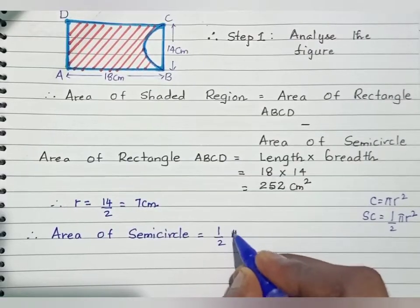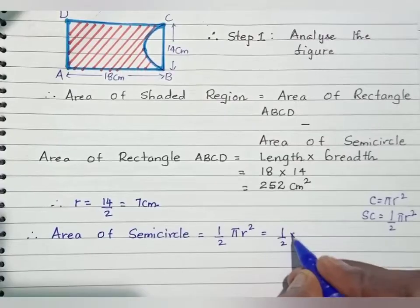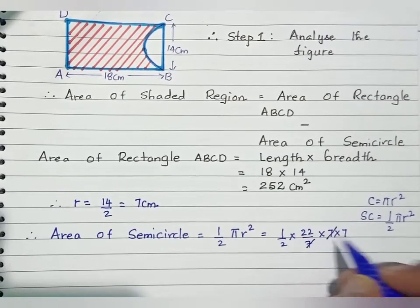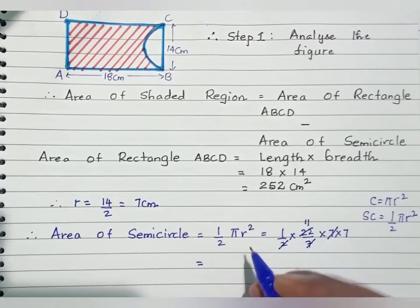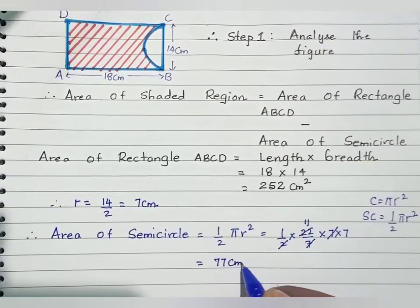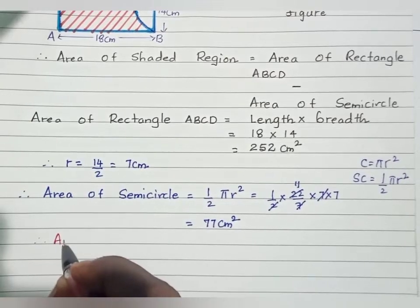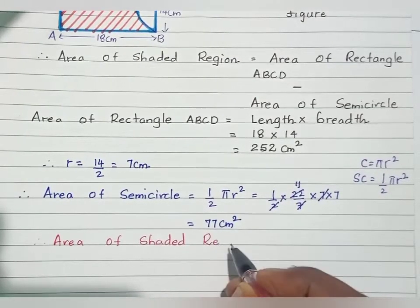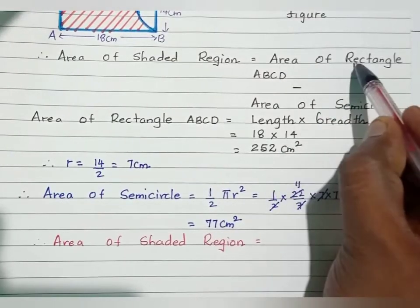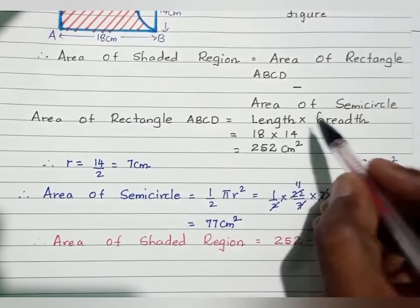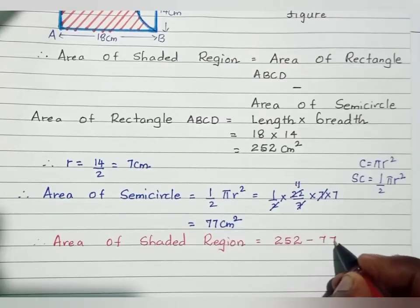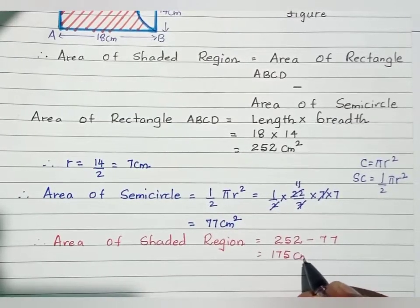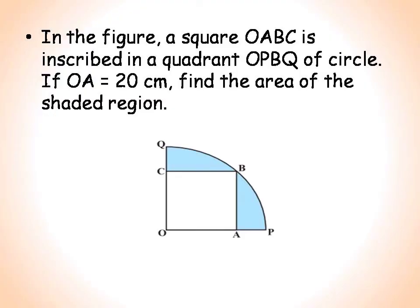Area of semicircle equals half into pi r square, that is half into 22/7 into 7 into 7. The 7s cancel, leaving 11 into 7, which is 77 centimeter square. Now the area of the required shaded region is area of rectangle minus area of semicircle: 252 minus 77 equals 175 centimeter square.